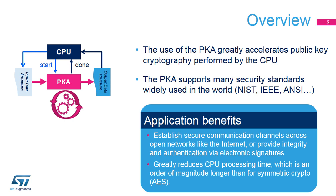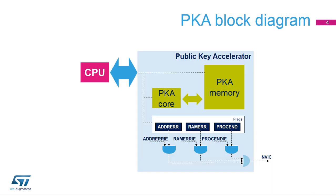Public key cryptography is part of many security standards and is widely used to establish secure communication channels across unsecure open networks like the Internet, or to provide authentication via electronic signatures. Software-only solutions can be too slow for real-time applications, impacting the system's overall performance. The PKA peripheral is an efficient hardware accelerator that speeds up the public key cryptography operations performed by the CPU. Performing public key cryptography requires intensive computing, which represents a huge workload when done entirely by software.